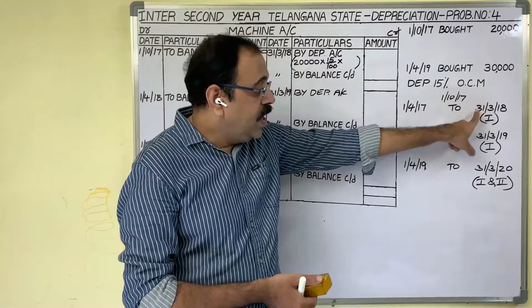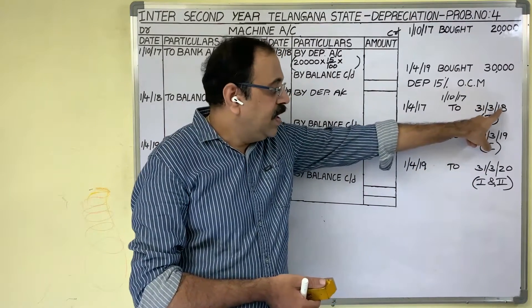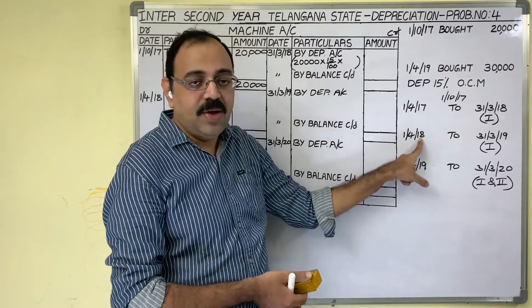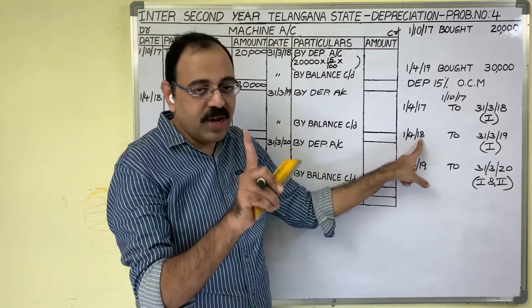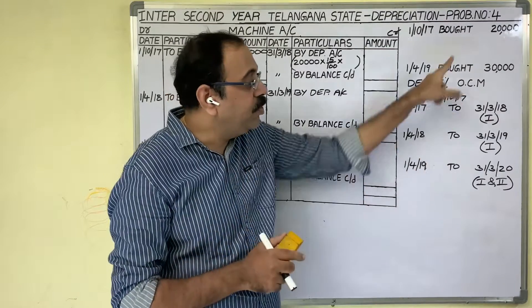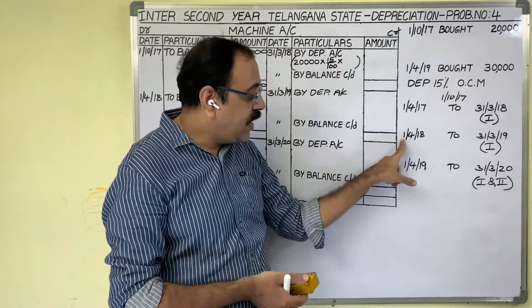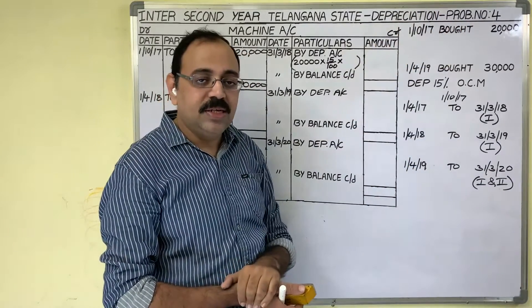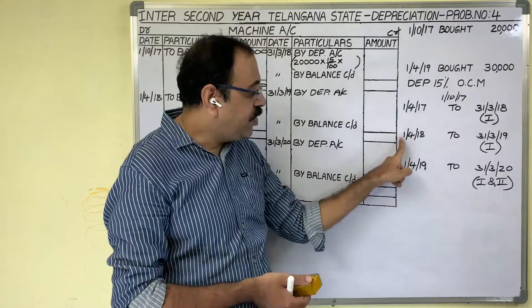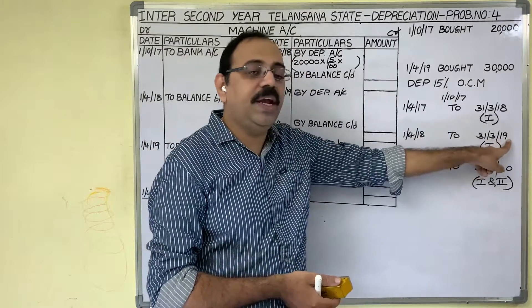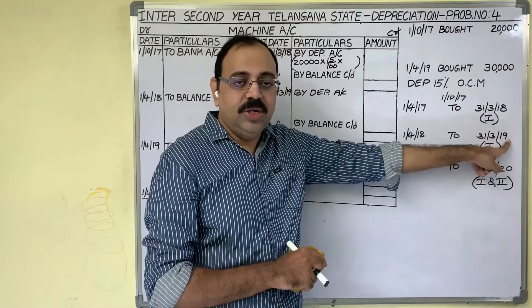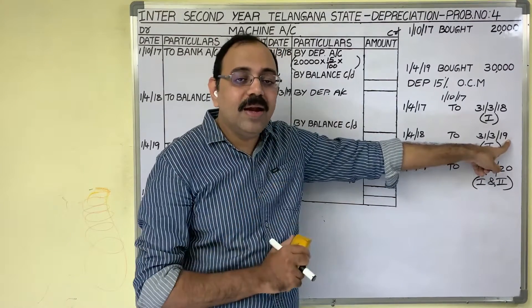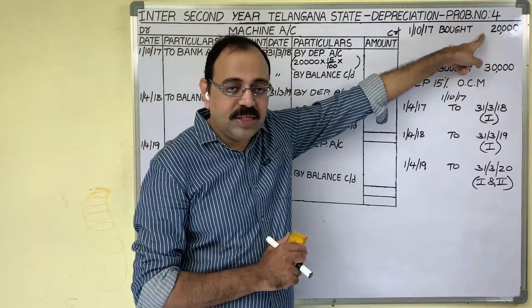If 31st March 2018 is the last date of the 1st year, then the next year starting date will be 1st April 2018. On that day we have one asset with a value of 20,000 rupees. In the 2nd year, this 20,000 rupees worth asset was used from 1st April 2018 to 31st March 2019 — the full year. So for 12 months we should calculate depreciation on the 20,000 rupees worth asset.